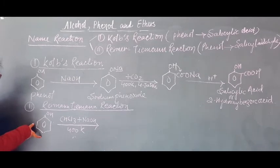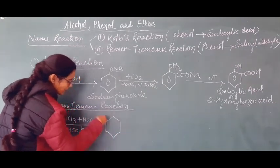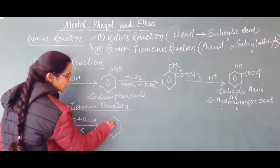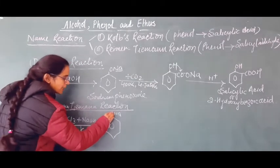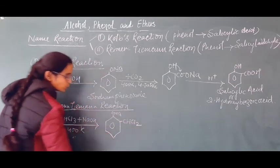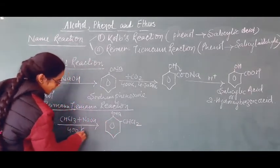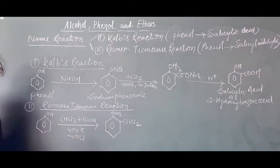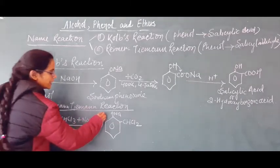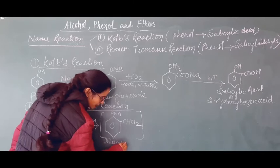In the first step, phenol is treated with chloroform and sodium hydroxide. NaOH reacts with the benzene derivative — ortho position replacement occurs and sodium phenoxide (O-Na) is formed. Then chloroform reacts at the ortho position — CHCl₂ is formed; one Cl and one H are replaced. H comes from the ortho position and Cl comes from chloroform, forming an unstable reaction intermediate.